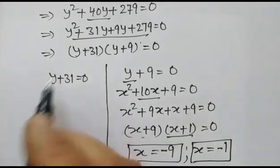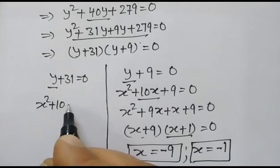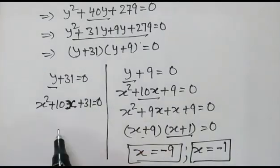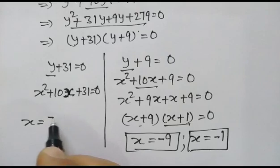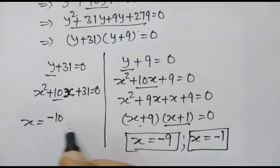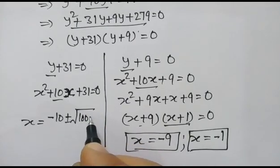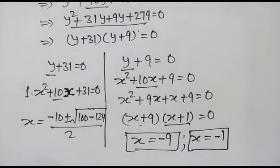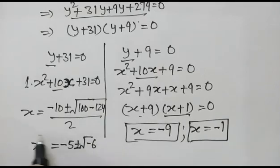Case 2: y+31 = 0, so x²+10x+31 = 0. Here x will be equal to minus b, plus or minus square root of b²-4ac, over 2a, where a = 1. So x = -5 ± √(-6).